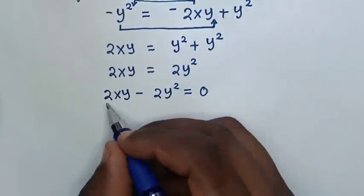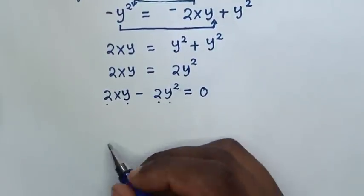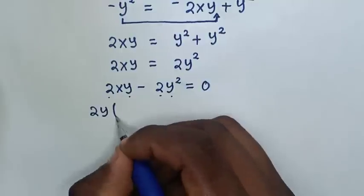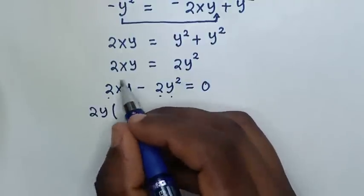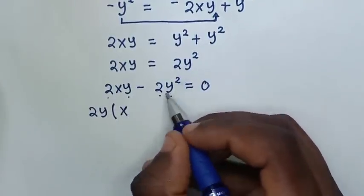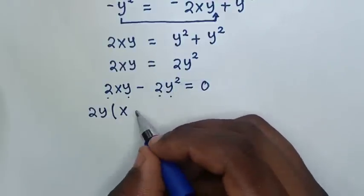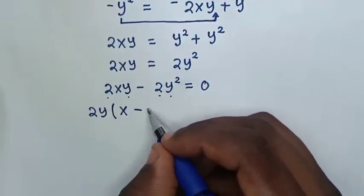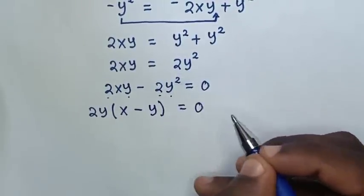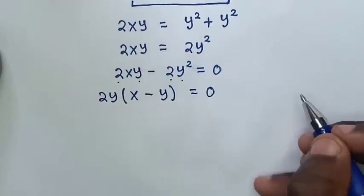In this equation, 2y is common, so we will take 2y out of the bracket. This divided by 2y is x, and this divided by 2y is minus y. So: 2y times (x minus y) is equal to 0.